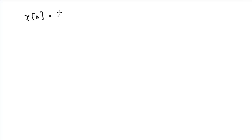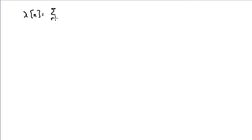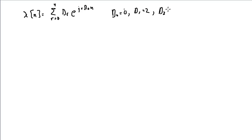We can also write x(n) as the sum from r = 0 to 4 of d_r e^(jrω₀n), where d₀ = 0, d₁ = 2, d₂ = j, d₃ = d₋₂ = -j, and d₄ = d₋₁ = 2.